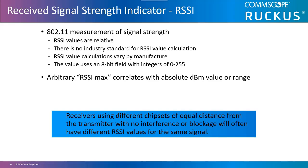RSSI is usually measured during the reception of the 802.11 frame preamble. It will be seen as negative dBm values. As discussed earlier, an RF signal weakens as it propagates. The largest portion of loss comes at about five meters away from the antenna of the transmitter. This loss is exponential, meaning the farther away the receiver is from the transmitter, the weaker the signal will appear in the RSSI values.